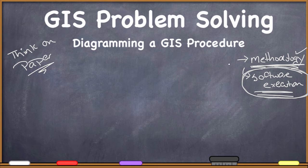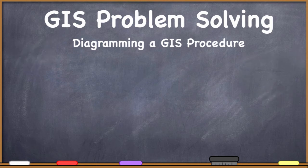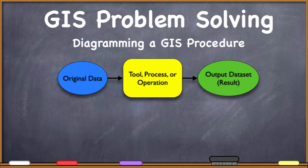Let me show you how we're going to be diagramming out GIS problems. I want to standardize this across all of my students so we can all look at each other's diagrams and understand what's going on. I've got colors here — blue, yellow, and green. If you're just working with pencil on paper and don't have colors, that's fine, though I do recommend sitting down with colored pencils or markers when doing a diagram in a notepad to keep everything consistent.